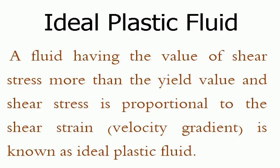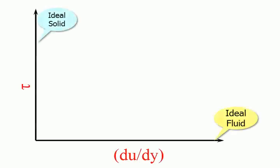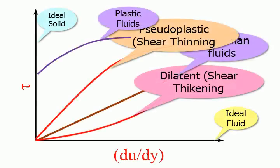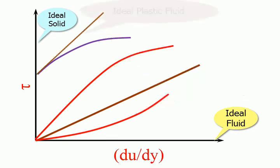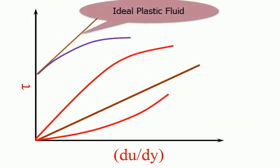A fluid having the value of shear stress more than the yield value, and where shear stress is proportional to the shear strain — that is, velocity gradient — is known as Ideal Plastic Fluid.